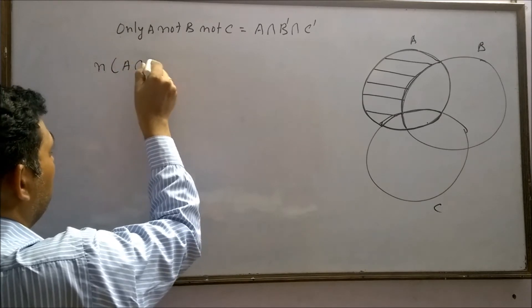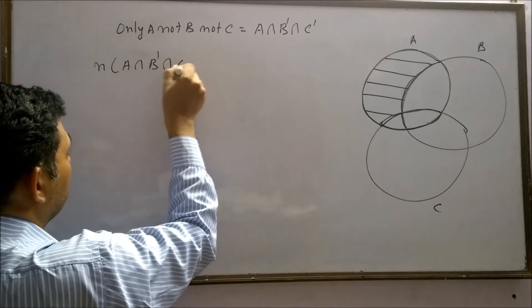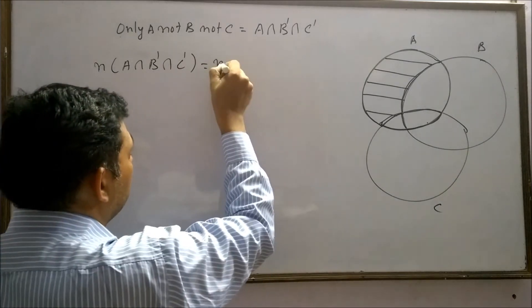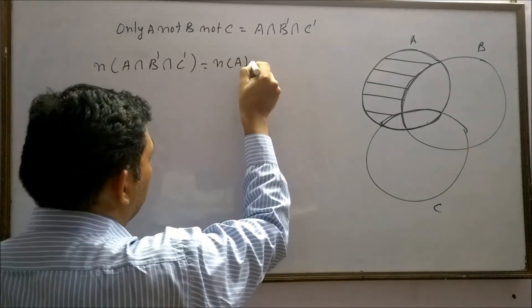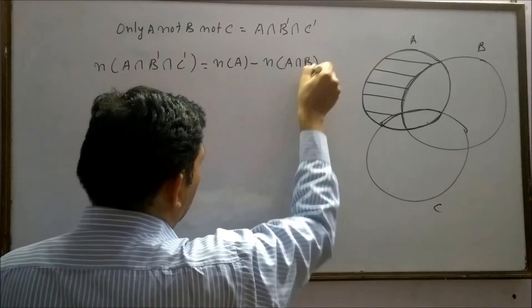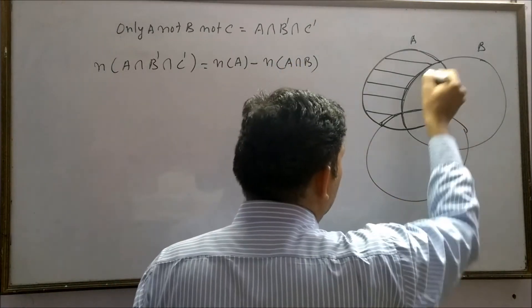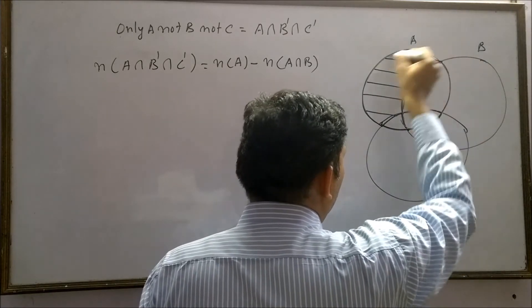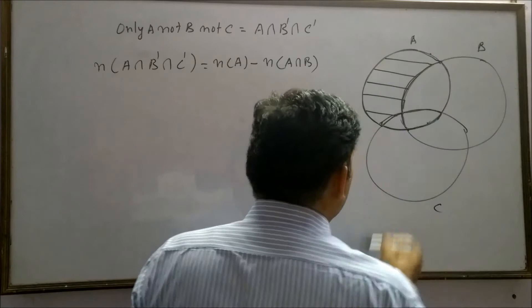And A intersection B complement intersection C complement will be equal to n(A) minus n(A intersection B). A intersection B is this part, so this part we have to remove from the whole set A.